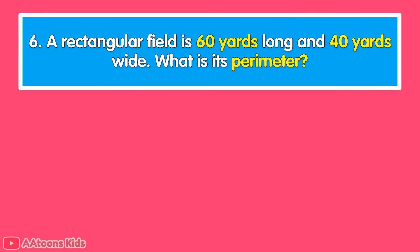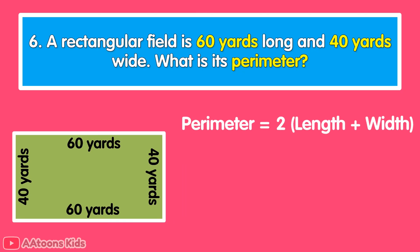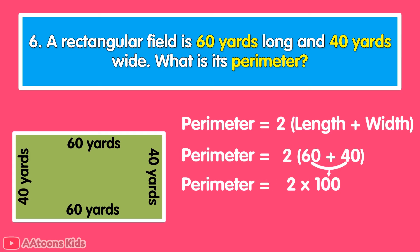A rectangular field is 60 yards long and 40 yards wide. What is its perimeter? The perimeter of a rectangle is 2 times (length plus width). Length is 60 yards and width is 40 yards. Add 60 plus 40 to get 100, then multiply 100 by 2 to get 200. So the perimeter of the rectangular field is 200 yards.